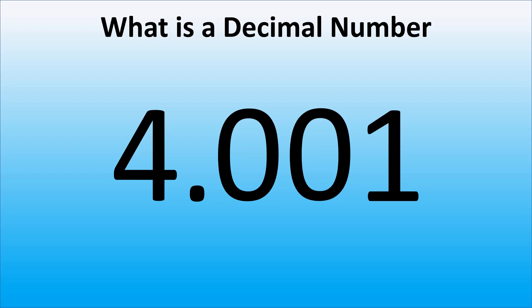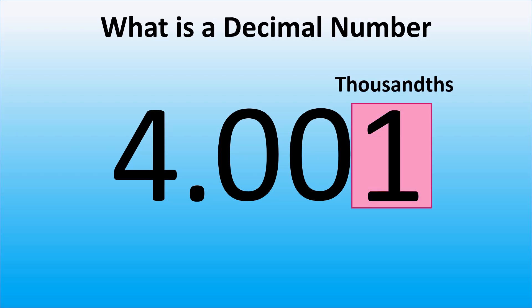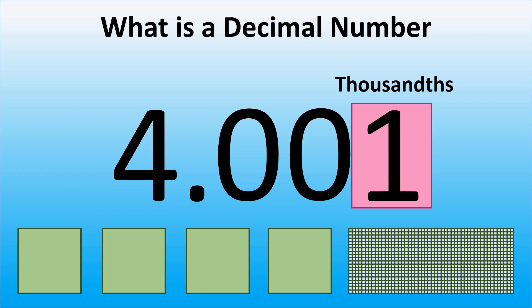What if we have 3 digits after the decimal point? If there are 3 digits to the right of a decimal point, the denominator of a fractional part is 1,000. Thus, here we have 4 wholes and 1 thousandth. In other words, it means that we have 1 part out of a total of 1,000 equal parts.